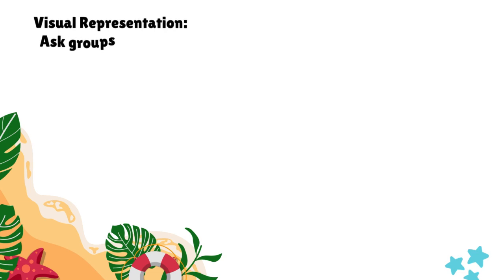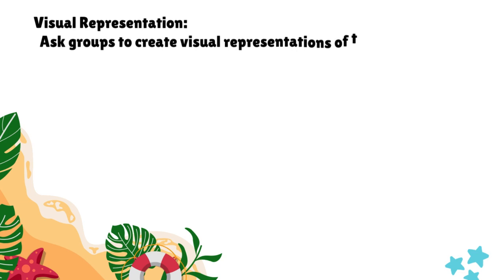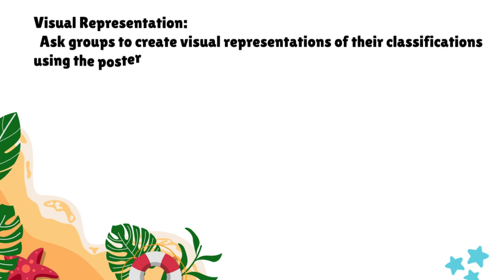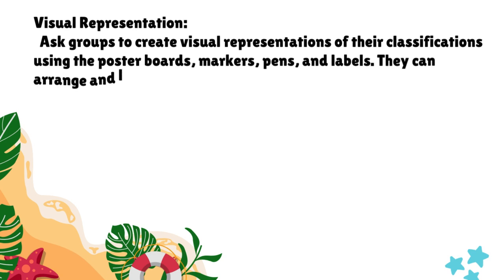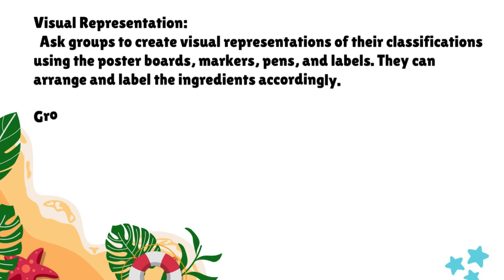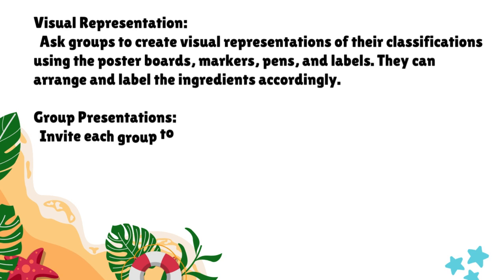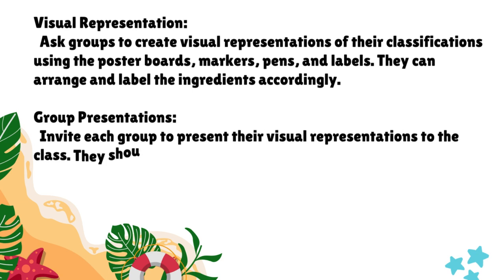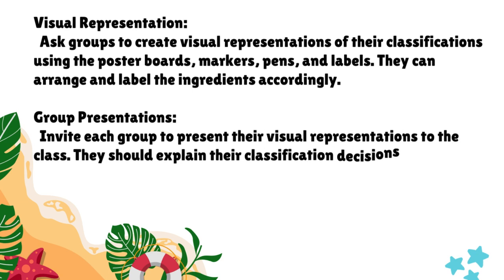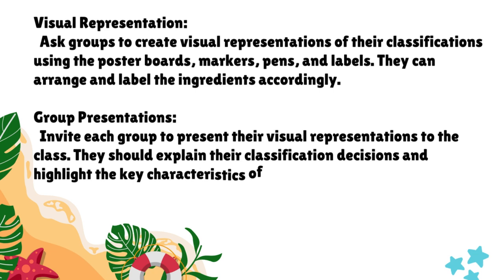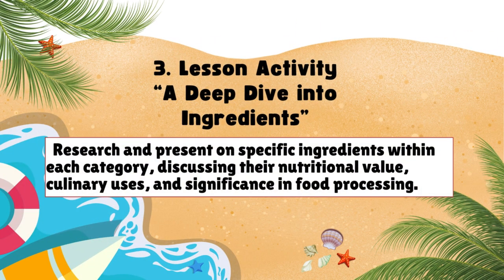Visual representation: Groups create posters using markers, pens, and labels to visually represent their classifications. They should arrange and label the ingredients according to categories. Group presentations: Each group presents their poster, explains their classification decisions, and highlights the key characteristics of each category.